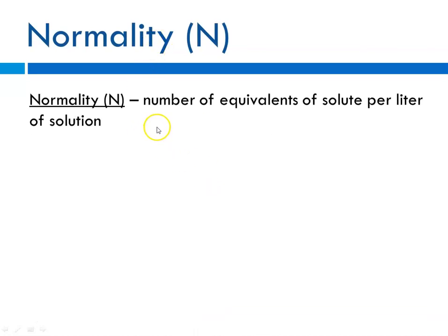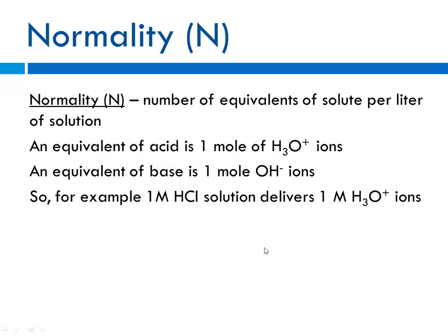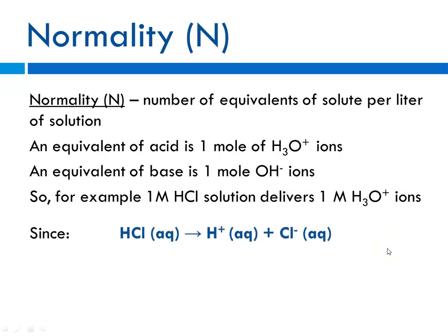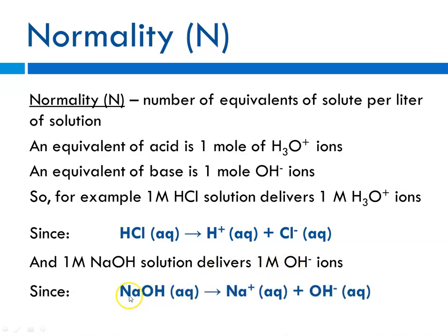Normality is defined as the number of equivalents of solute per liter of solution. An equivalent of an acid is 1 mol of H3O+ ions; an equivalent of a base is 1 mol of hydroxide ions. For example, a 1 molar HCl solution delivers 1 molar hydronium ion, since aqueous HCl gives H+ plus Cl−. Similarly, 1 molar sodium hydroxide delivers 1 molar hydroxide in solution because NaOH dissociates to Na+ and OH− in a 1-to-1 ratio.